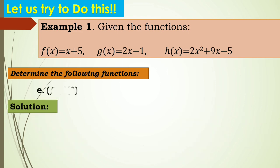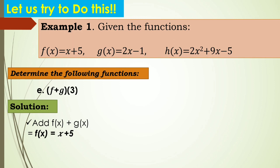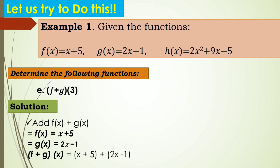How about evaluating f plus g of 3? You need to first find f plus g of x by adding f of x plus g of x. Our f of x is x plus 5 and g of x is 2x minus 1. Add x plus 5 and 2x minus 1 by combining like terms. So f plus g of x equals x plus 5 plus 2x minus 1, which gives f plus g of x equals 3x plus 4.